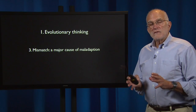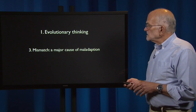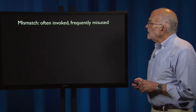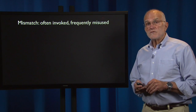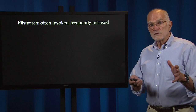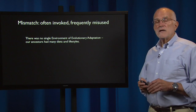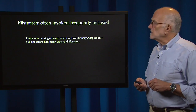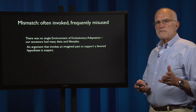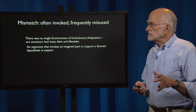The third major evolutionary concept useful in evolutionary medicine is mismatch. It is a major cause of maladaptation or disease state. Mismatch is often invoked and it's frequently misused. One has to be careful in thinking about causes of mismatch. There was not a single environment of evolutionary adaptation — our ancestors had many different diets and lifestyles. So any argument that invokes an imagined past to support a favored hypothesis is suspect. It's biased.